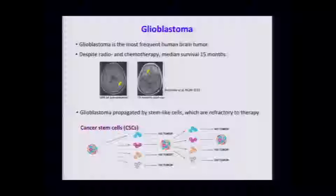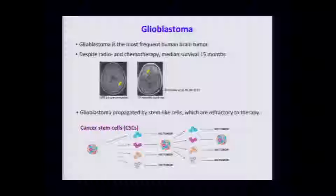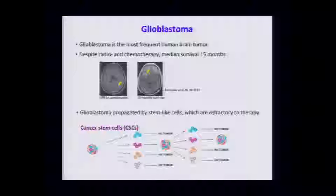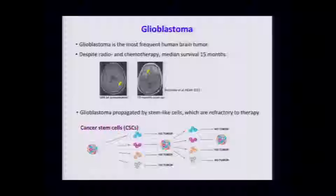By the time you've resected the lesion, there are actually tumor stem cells that have infiltrated throughout the brain, and these seem to be resistant and refractory to therapy. This is a model of cancer stem cells — in glioblastoma there is evidence that not all cells are alike, and that there are these cells that can both self-renew and propagate tumors. For this talk I'll call them cancer stem cells or glioma stem cells.